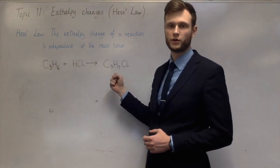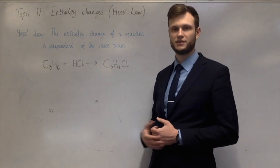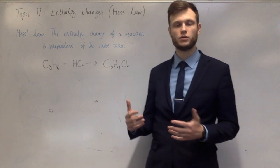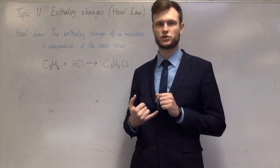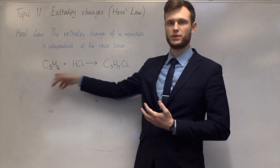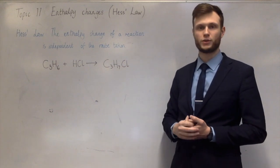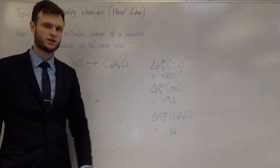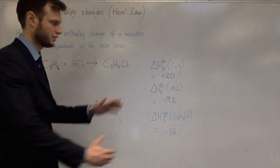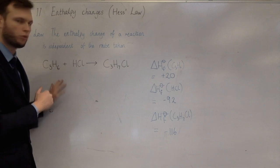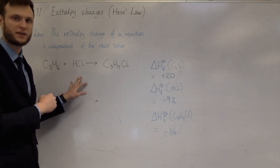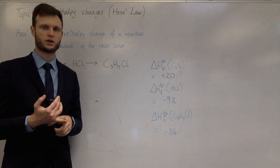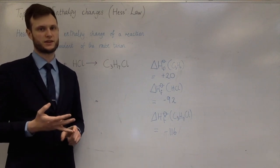In this example, there's one equation whose enthalpy change you don't know and are trying to calculate — it's the addition of hydrochloric acid to propene to make chloropropane. This time we'll use formation data. I need the enthalpy change of formation of propene, hydrogen chloride, and 2-chloropropane. Those values are plus 20 for propene, minus 92 for hydrogen chloride, and minus 116 for 2-chloropropane. Remember, formation reactions make one mole of a compound from its elements under standard conditions with everything in its standard states.